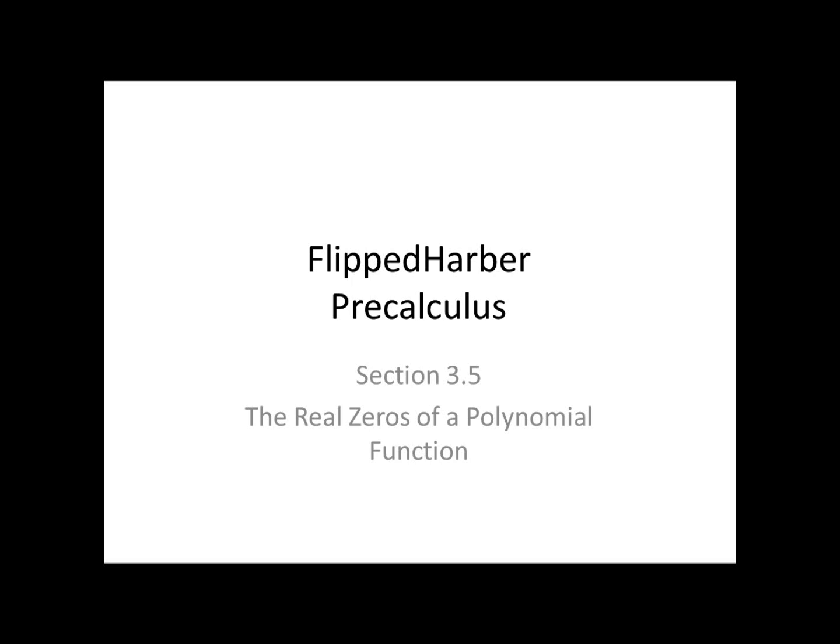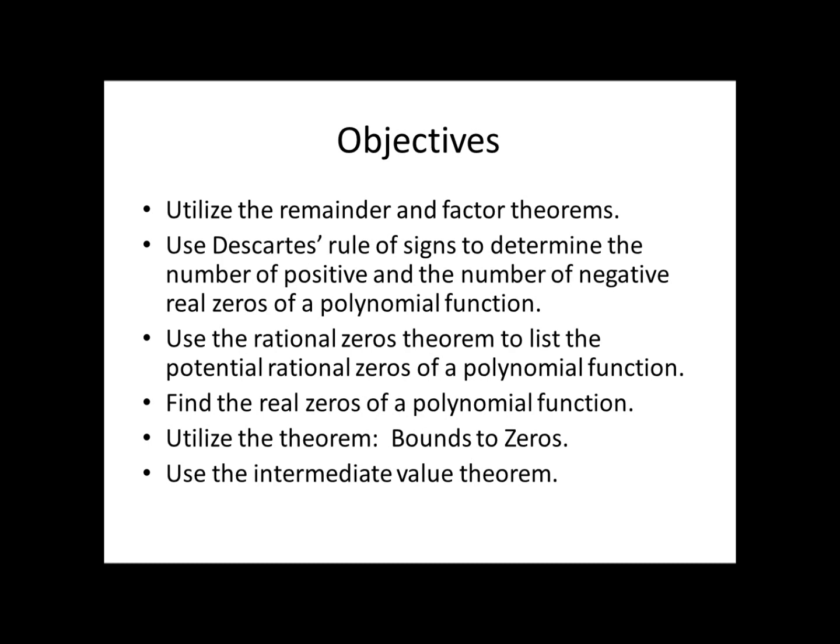Hello, this is Flip Tarver for Pre-Calculus. In this video, we'll be going over section 3.5, The Real Zeros of a Polynomial Function. Our objectives for this lesson are to utilize the remainder and factor theorems, use Descartes' Rule of Signs to determine the number of positive and negative real zeros of a polynomial function, use the Rational Zeros Theorem to list the potential rational zeros, find the real zeros of a polynomial function, utilize the Bounds on Zeros Theorem, and use the Intermediate Value Theorem.